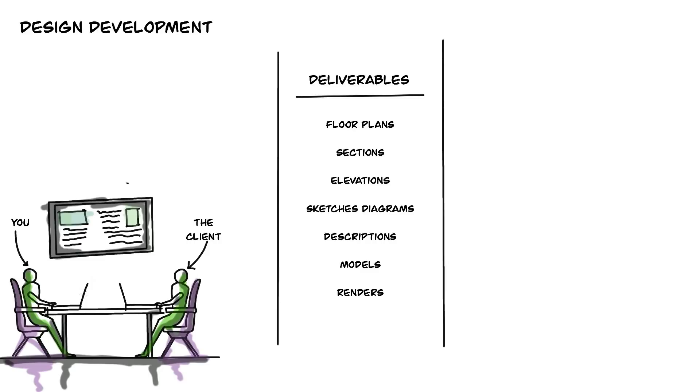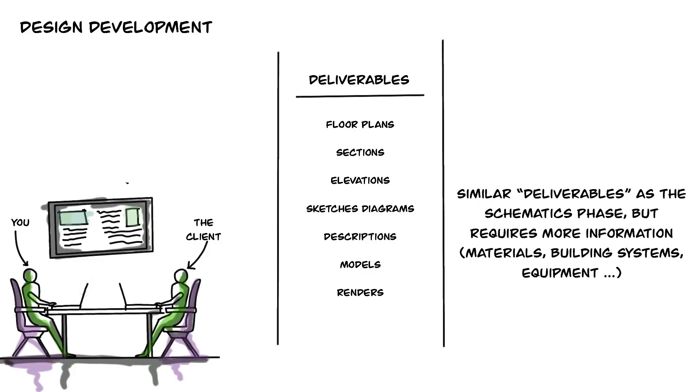This includes materials, doors, windows, so on and so forth. You, the architect, will be working with consultants that will design the structure, mechanical systems, and electrical and plumbing components. In this phase, those consultants will also have more defined systems that you will have to include in your design.